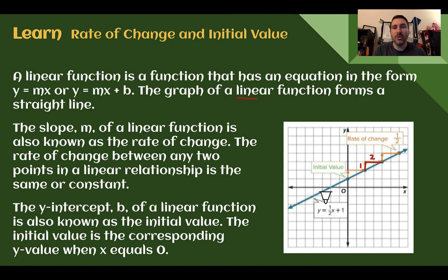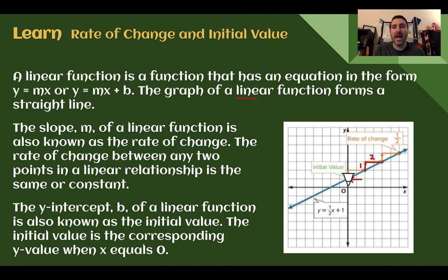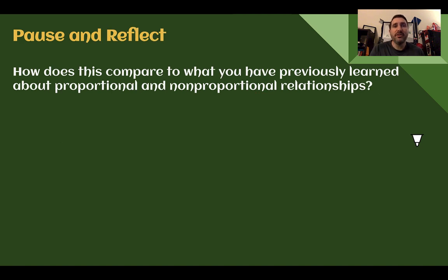The y-intercept, which is b of our linear function, is going to be our initial value — essentially, where is our function starting? The initial value is the corresponding y-value when x equals 0. Take time to pause and reflect: how does this compare to what you've previously learned about proportional and non-proportional relationships? Pause the video now and write down your thoughts.